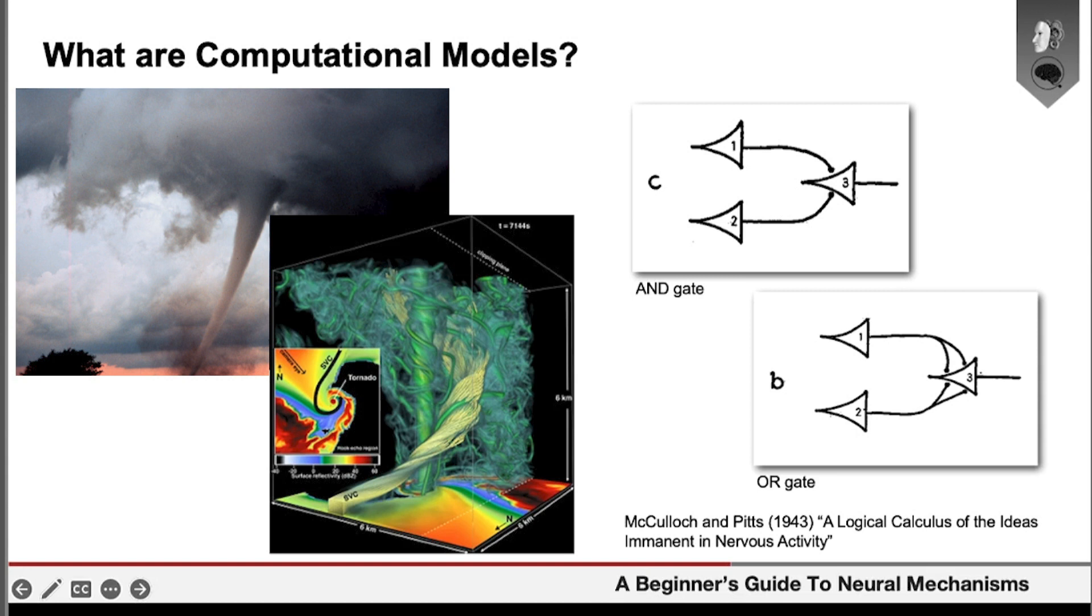Nowadays, they're used pretty much everywhere in science. One really important example is computational models of weather systems. These can be simulations of particular weather events that happen, like a tornado.